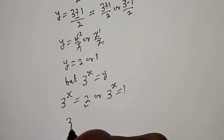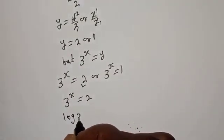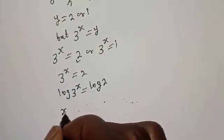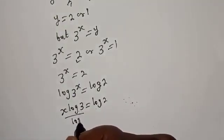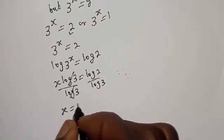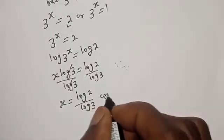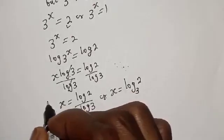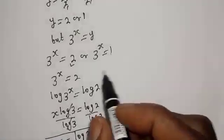Let's solve 3 raised to power s equals 2. Taking the log of both sides: log of 3 raised to power s equals log 2, which gives s times log 3 equals log 2. Dividing both sides by log 3, s equals log 2 over log 3, or equivalently s equals log base 3 of 2. This is the first value of s.